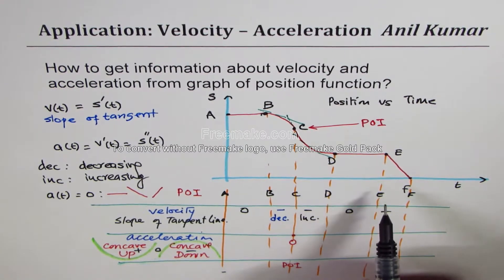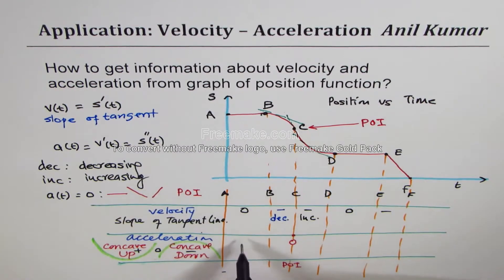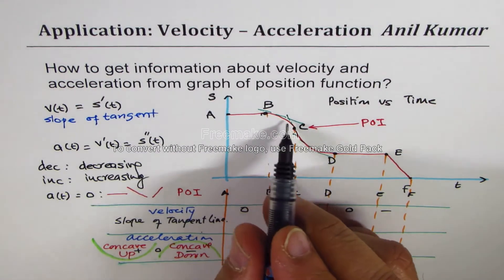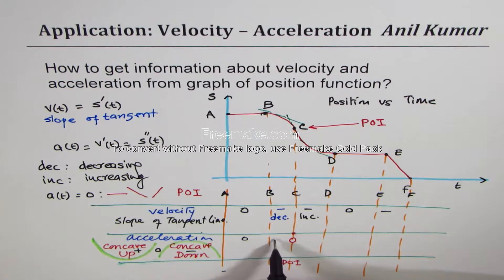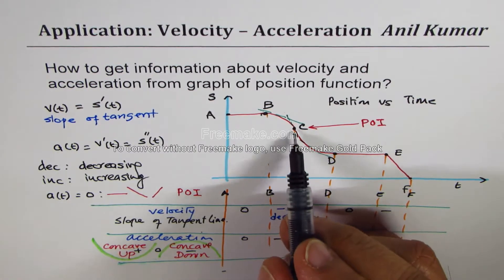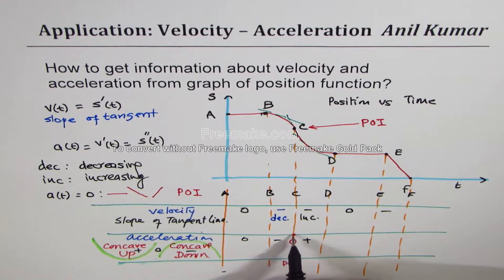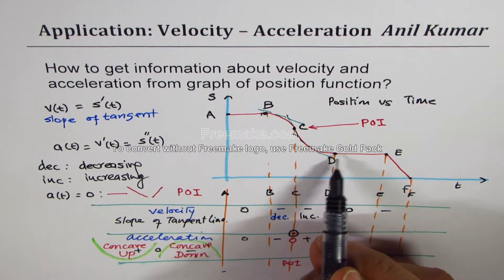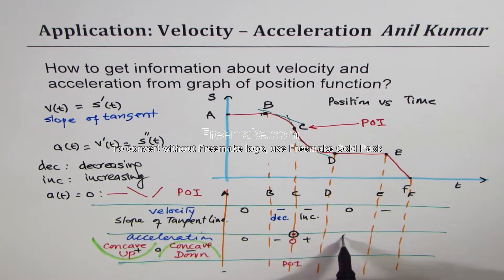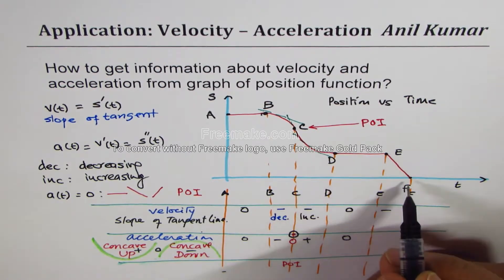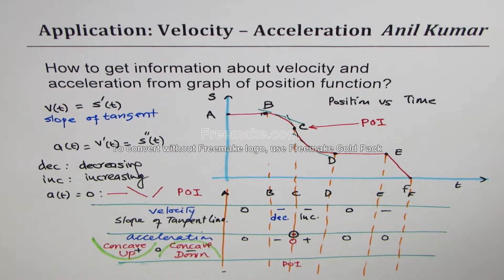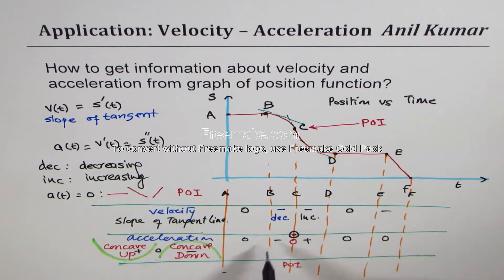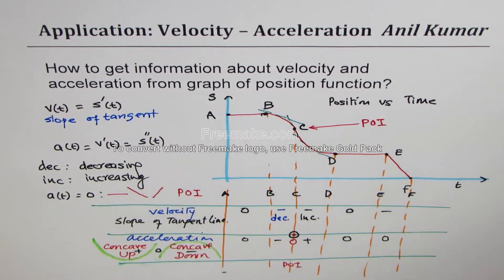Now let's fill in the table from the graph. From a to b it is a straight line, so acceleration is zero. From b to c it is concave down, so acceleration is negative. Between c and d it is concave up, so acceleration is positive — at c it is zero. From d to e, acceleration is zero again.